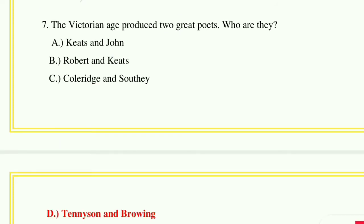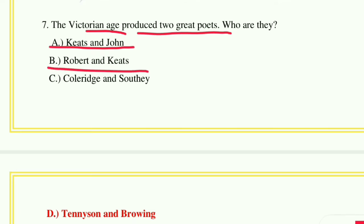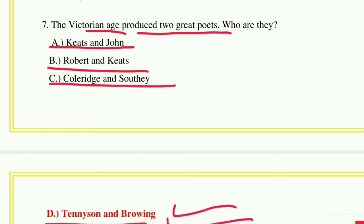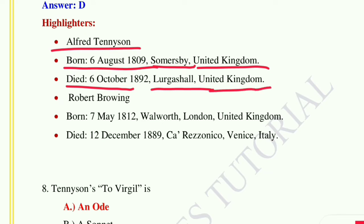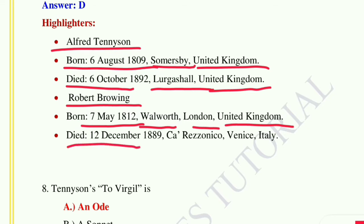Question number seven: The Victorian age produced two great poets — who are they? Option A: Keats and John, option B: Robert and Keats, option C: Coleridge and Southey, option D: Tennyson and Browning. The correct answer is option D, Tennyson and Browning. Alfred Tennyson was born on 6th August 1809 and died 6th October 1892. Robert Browning was born on 9th May 1812 and died on 12th December 1889 in Venice, Italy.